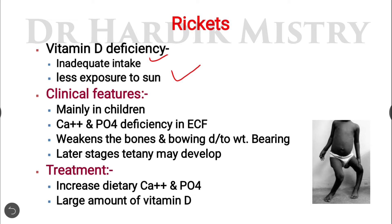Rickets mainly presents in children. There is calcium and phosphate deficiency in the extracellular fluid (ECF). In conditions of hypocalcemia, there is a decrease in calcium and phosphate levels inside the extracellular fluid. This weakens the bones and causes bowing due to weight bearing — due to excessive weight, this type of bone deformity takes place.